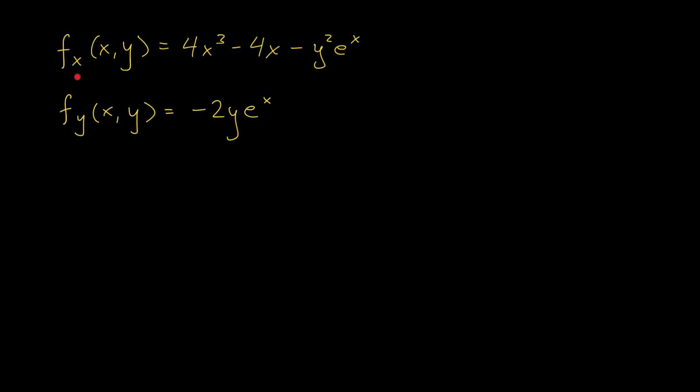Here are partial derivatives once again. We know that they exist at all points in our functions domain. And so the only way a critical point could arise is if both fx and fy are equal to zero. So we have to solve a system of equations here. We set both of these expressions equal to zero and find all solutions x, y.